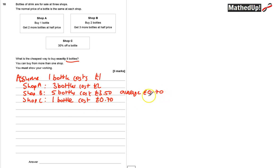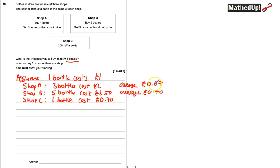At shop A, three bottles cost two pounds, so the average cost is two pounds divided by three, which is about 67p — the lowest average. However, to get this price I need to buy in multiples of three. Since I need exactly eight bottles, the most I can buy from shop A is six bottles for four pounds. I can't buy nine because I need exactly eight.